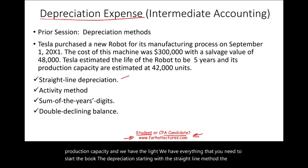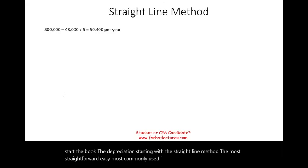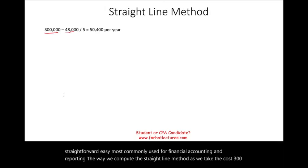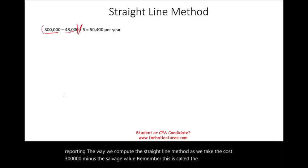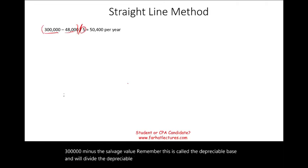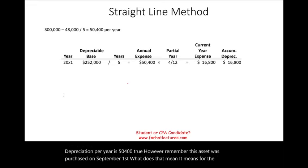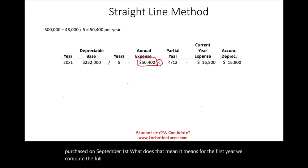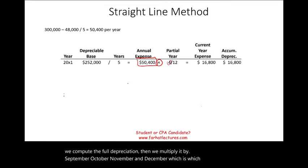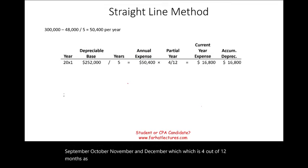Starting with the straight line method — the most straightforward and most commonly used for financial accounting and reporting. We take the cost, $300,000, minus the salvage value. This is called the depreciable base, and we divide it by the life. The depreciation per year is $50,400. However, this asset was purchased on September 1st. For the first year, we compute the full depreciation then multiply it by 4 out of 12 months — September, October, November, and December. As a result, for the first year we only take depreciation of $16,800.